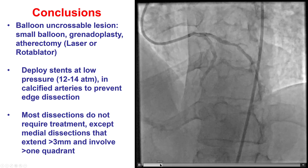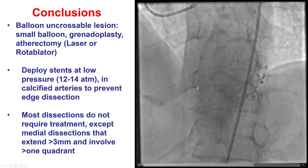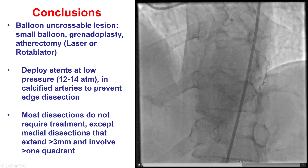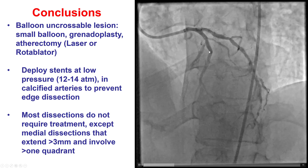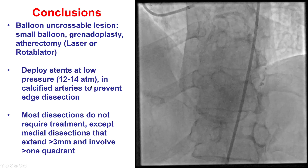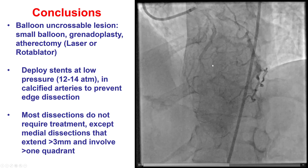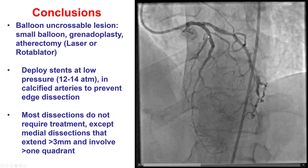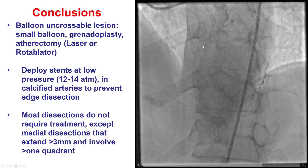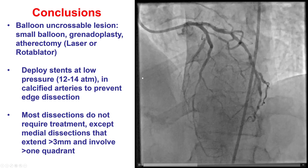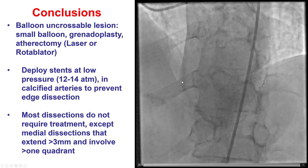In summary, in this patient we were able to successfully recanalize the LAD — successfully crossing it, unlike the first attempt — and restore flow into the vessel. It did require atherectomy and multiple stents for expansion, and we had dissections at both the proximal and distal edges. This illustrates an important lesson when treating heavily calcified vessels: be conservative with balloon sizing, stent sizing, and inflation pressures to minimize edge dissections.